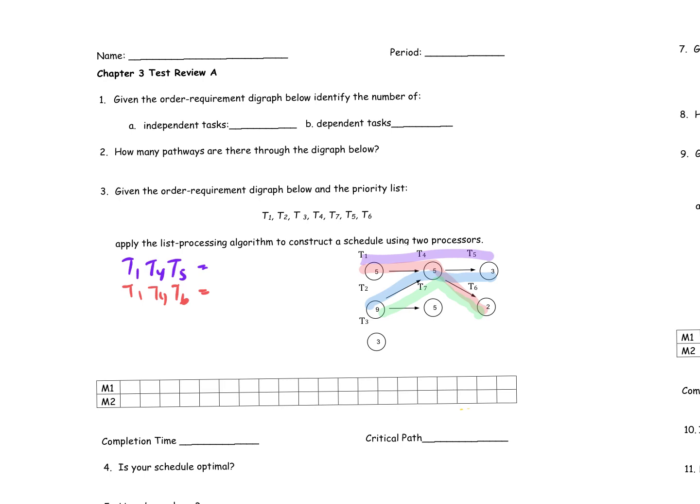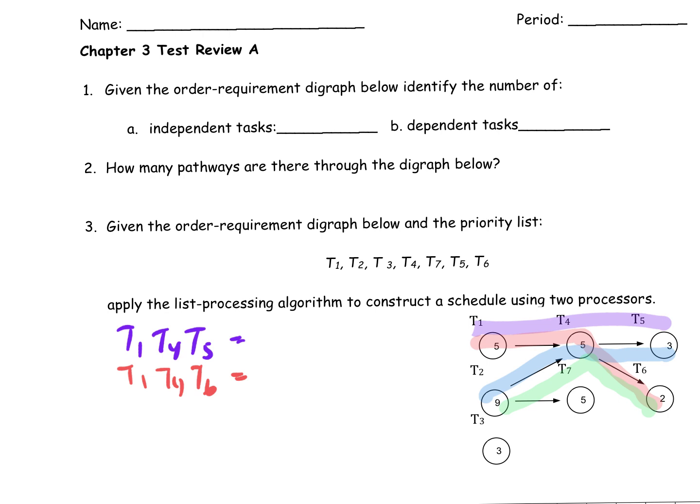This is number one right up front. When we talk about independent tasks, we also say ready task. Ready task is a little better description here. So I want you to look at this diagraph. How many ready tasks are there? You guys see there's three? A ready task is something I can put on the schedule right now.